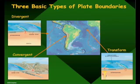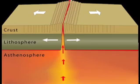Boundaries. There are three fundamental kinds of plate boundaries. Divergent — plates are moving apart. We're actually making new oceanic lithosphere at these spreading ocean ridges.